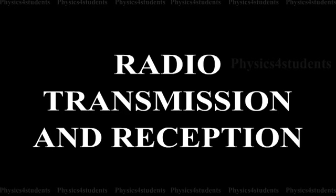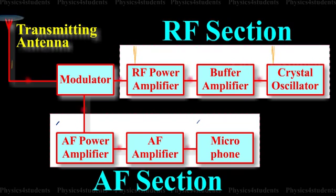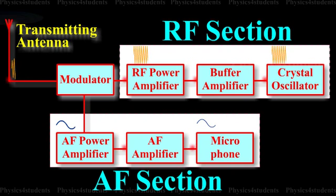Describe the process of radio transmission and reception. Amplitude modulated transmitter, i.e. AM transmitter. The figure shows the block diagram of amplitude modulated radio transmitter.